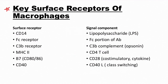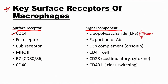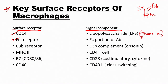This is a very important key slide on surface receptors of macrophages. The CD14 receptor on macrophages binds lipopolysaccharide (LPS) — high yield: LPS is present only in gram-negative bacteria. The Fc receptor binds the Fc portion of an antibody. Looking at antibody structure, we have the light chain, heavy chain, Fab region, and Fc region — so the Fc receptor binds at the Fc portion. The C3b receptor binds C3b complement.